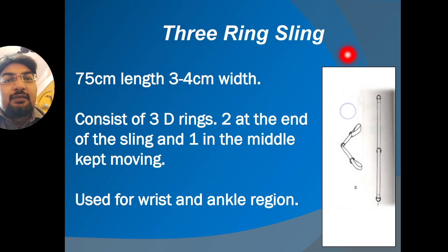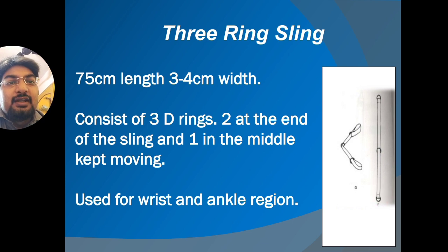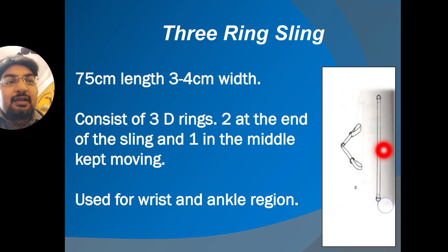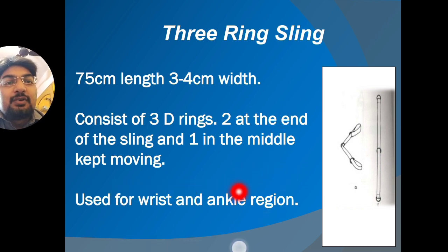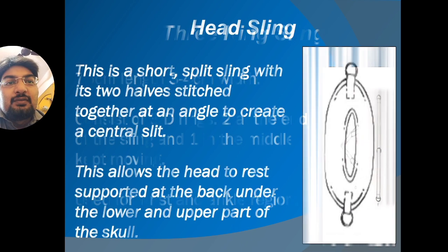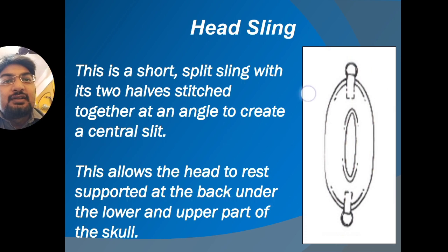The three-ring sling is 75 centimeters in length. It is named the three-ring sling because it has three D-rings — one at each end and an adjustable ring in between. It is used for supporting the wrist and ankle region.